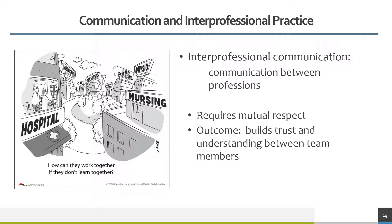Interprofessional communication is simply communication between two or more professions. Successful communication between professions requires mutual respect for each other; done well, this can result in building trust and understanding between team members. As the illustration says, how can they work together if they don't learn together? So interprofessional practice really should start in school, which is what UAMS and lots of other universities across the U.S. are working on. And in the illustration, there's a lab sciences building — somebody gets it that lab sciences is an important member of that team!